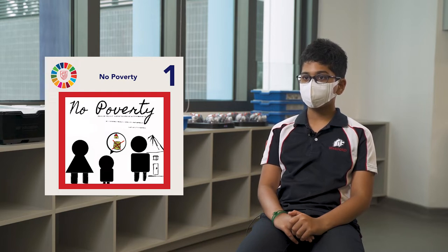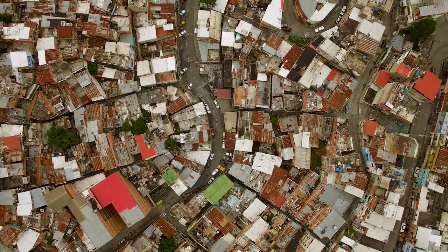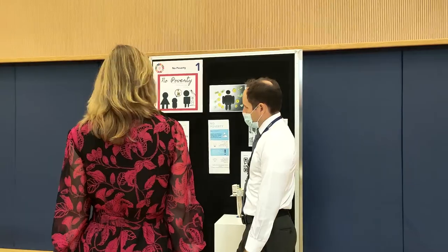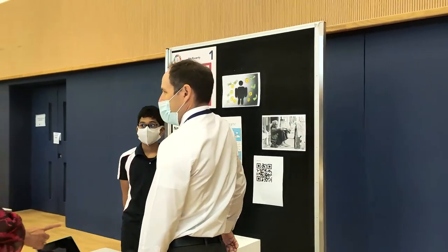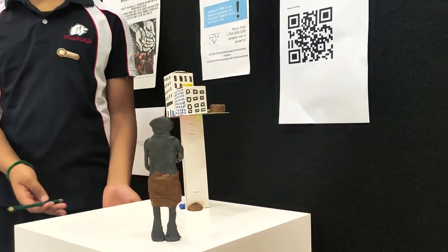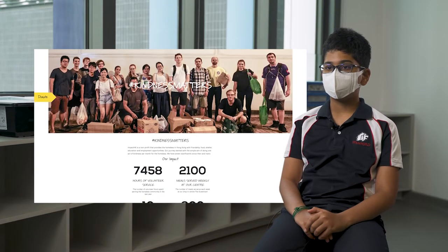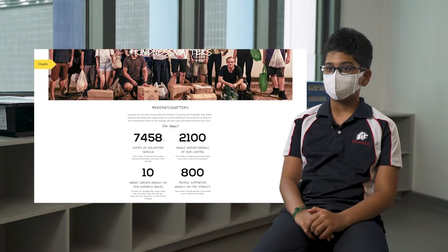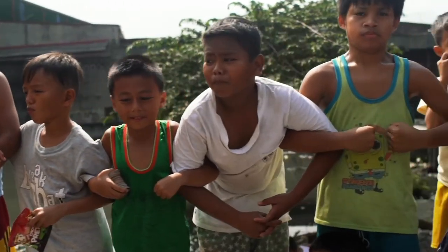I am currently focusing on no poverty, goal number one. I chose this goal because I have seen people suffer on the streets firsthand. 9.2% of the world's population is under the pressure of extreme poverty. My action plan is to spread awareness by posters or an expressive piece by making a sculpture. To help take direct action, I took a look at a website called Impact Hedgegate. I want people to know that we must help others, because all of us are humans and we must look out for each other.